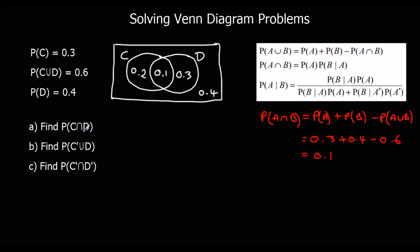P(C∩D) is 0.1 — we already worked that out. For P(not C ∪ D): the not-C sections are these two, and the D sections are the two inside the D circle. The union means everything marked, so 0.1 plus 0.3 plus 0.4, which equals 0.8.